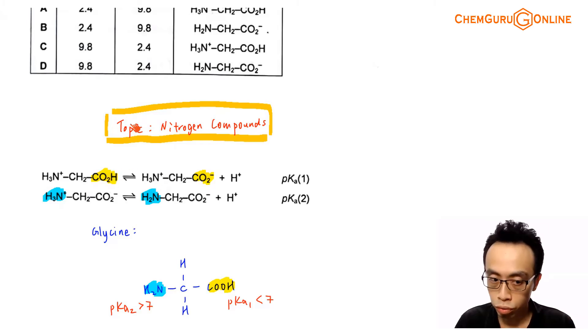If I consider dissociation 2, the second dissociation is targeting NH3+ to become NH2. So your ammonium becomes your amine. This is targeting the second pKa value, which should be targeting the alpha amino group.